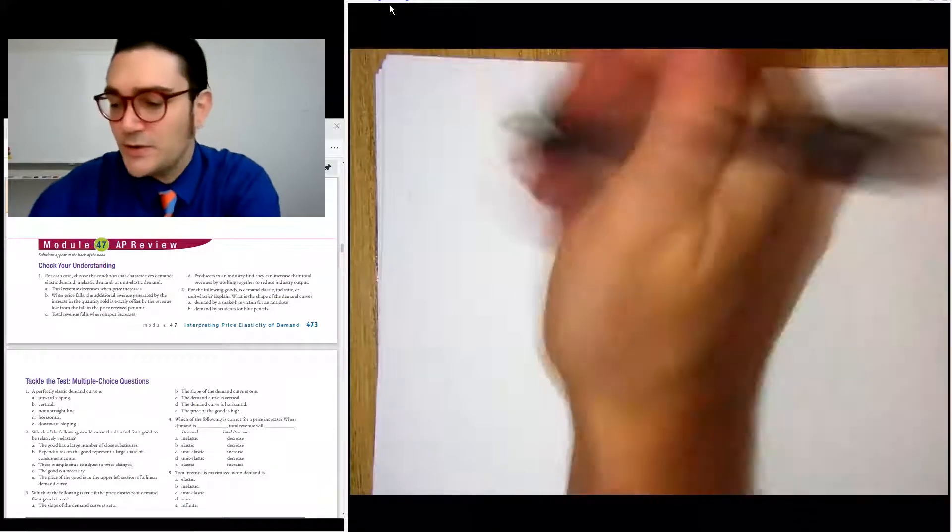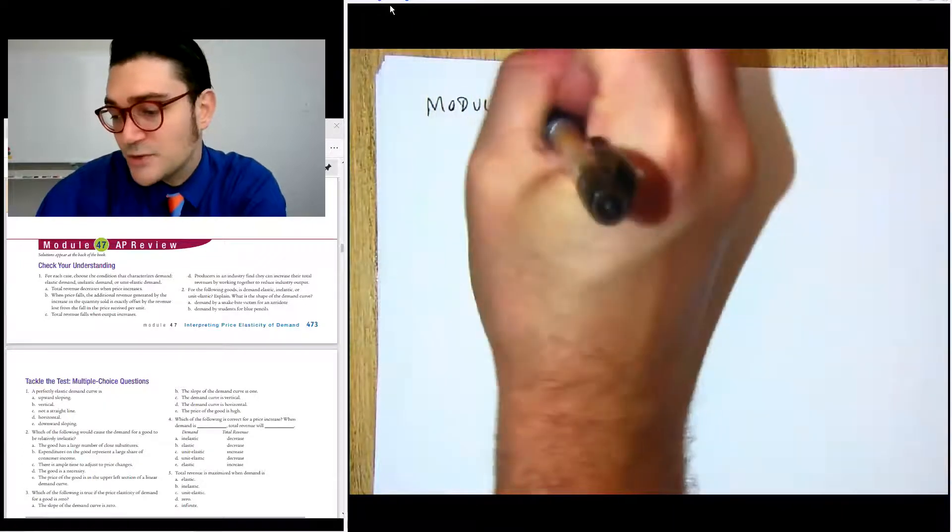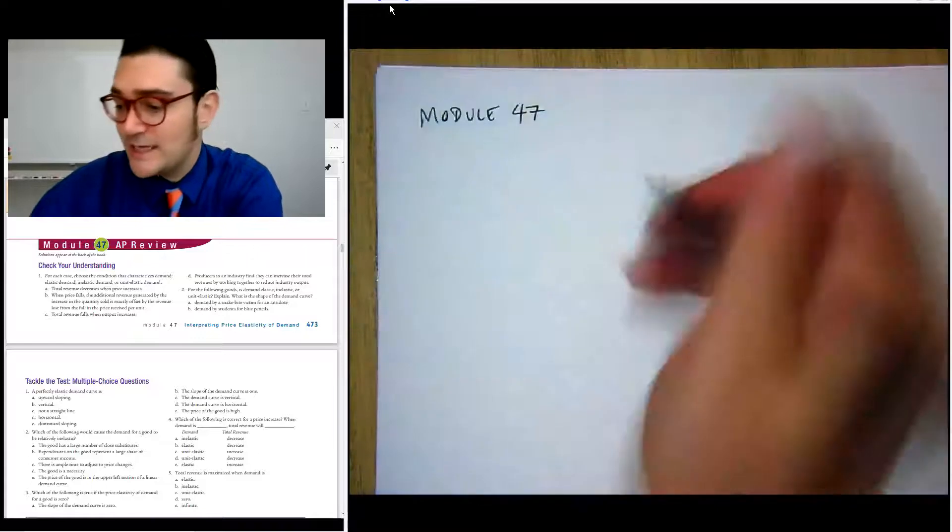Hi everybody. So in this video, we're going to be taking a look at module 47, which is about interpreting price elasticity of demand and a little bit about the total revenue test that we looked at in one of the lectures.